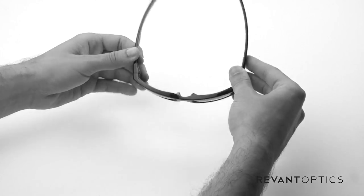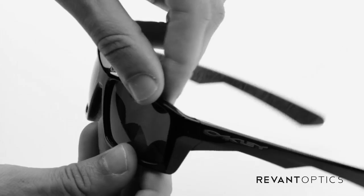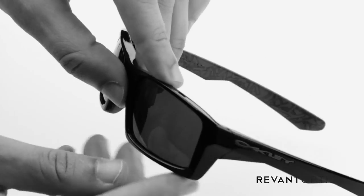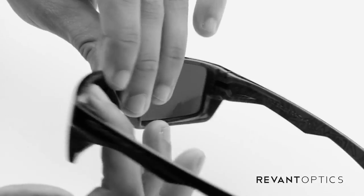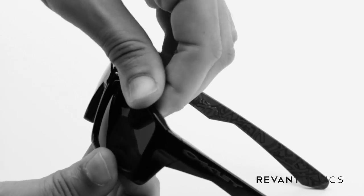This is a plastic frame and the way you remove the lenses is by pulling up on the top edge of the frame, pulling down on the bottom edge, and then you're going to push through on the backside of the lens with your fingers. I'll show you how that looks.